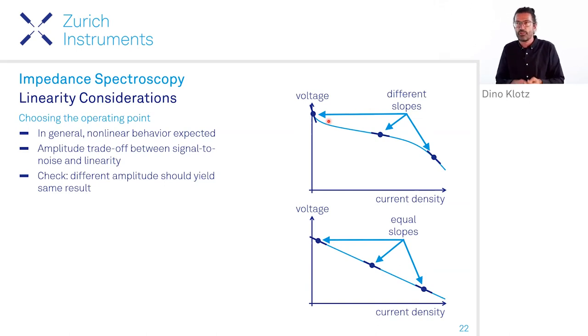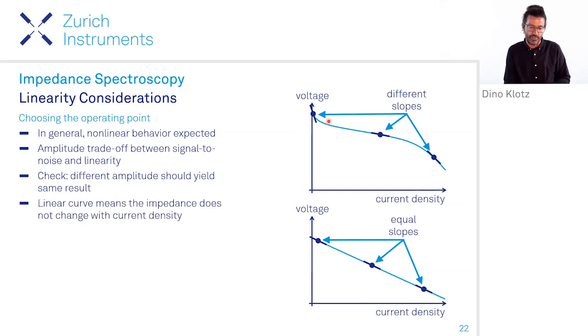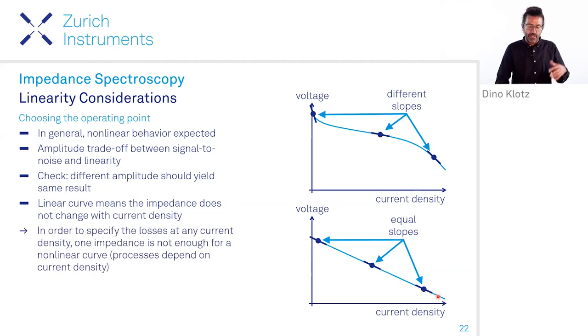If you have a linear curve here, it means that, in principle, the resistance should not change at any of these operating points. But it also tells you, if you want to specify the overall losses of your system, which is here from the open circuit voltage to the operating point, it doesn't help with this nonlinear curve to just measure at one point here. You have to look at these processes and how they evolve over a bias current density, for example, to really specify them.